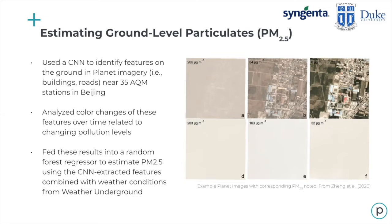They used a CNN to identify features on the ground in Planet imagery — things like buildings and roads — near 35 different air quality monitoring stations in Beijing, and analyzed color changes of these features over time related to changing pollution levels. The images shown here are from Planet, with the particulate matter level measured from the air quality monitoring station in the upper left corner of each. They then fed these results into a random forest regressor, combining CNN-extracted features with weather conditions from Weather Underground to ensure differences came from pollution rather than clouds, haze, or fog.